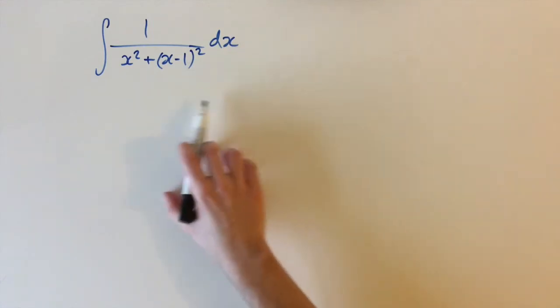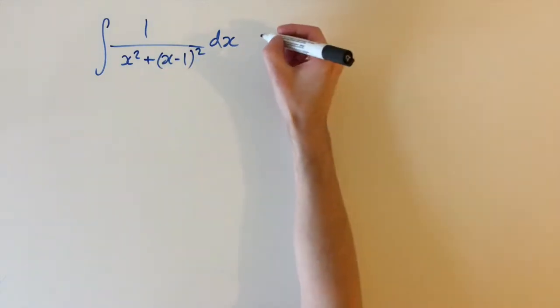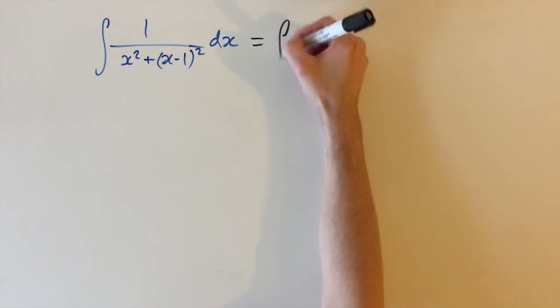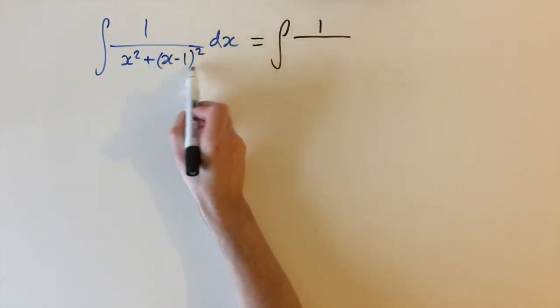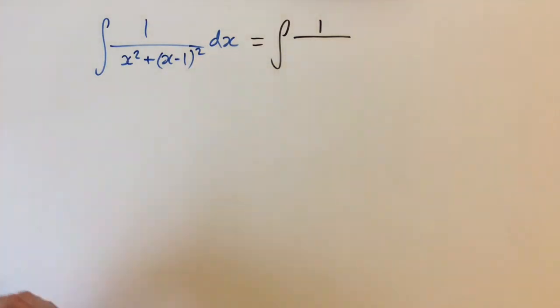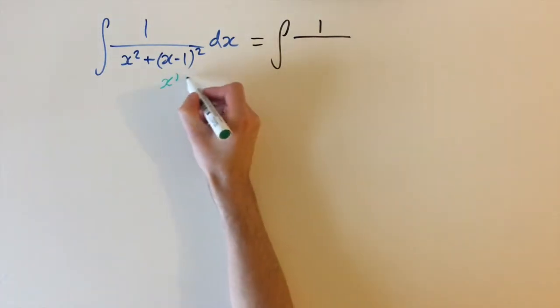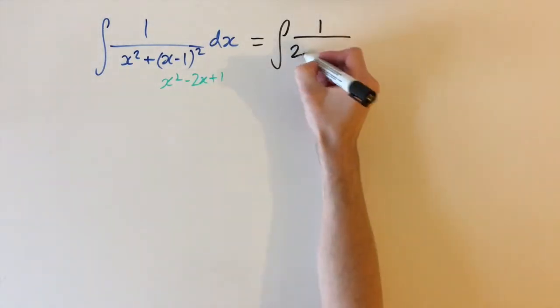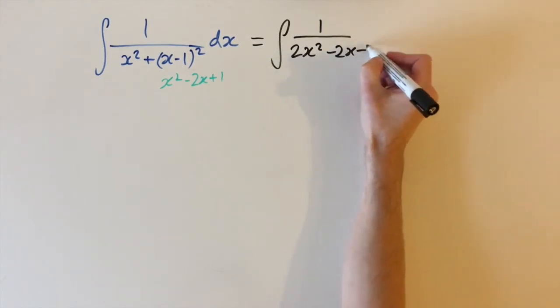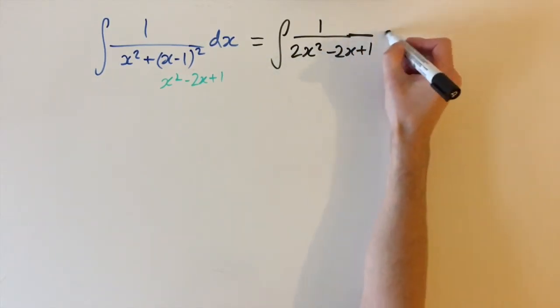If we don't really know where to start, we can start by simplifying the bottom. We have the integral of 1 over, we have x squared plus, if we expand this out, this is x squared minus 2x plus 1. So we can collect the terms and we have 2x squared minus 2x plus 1 dx.